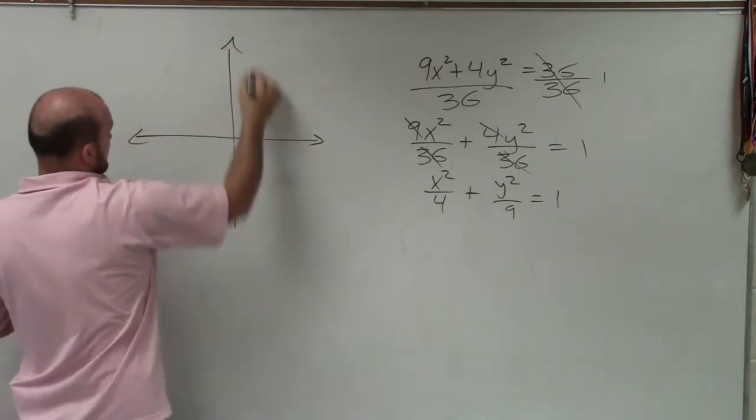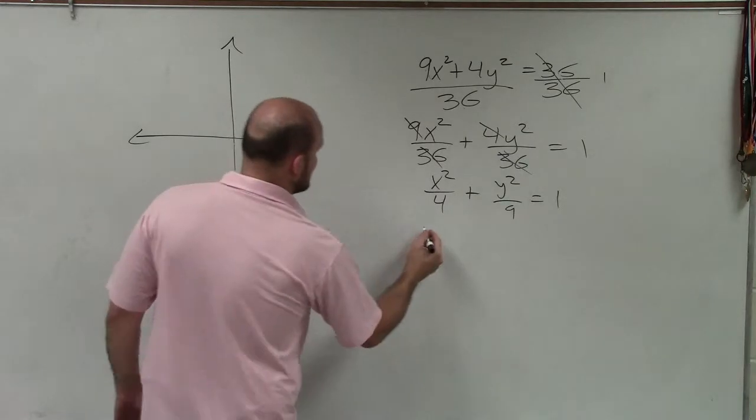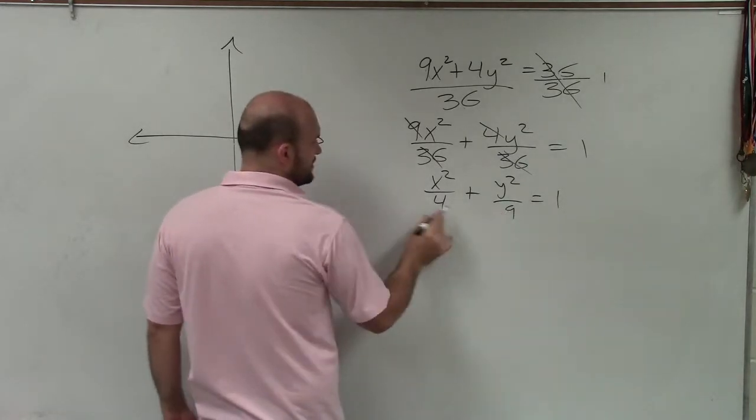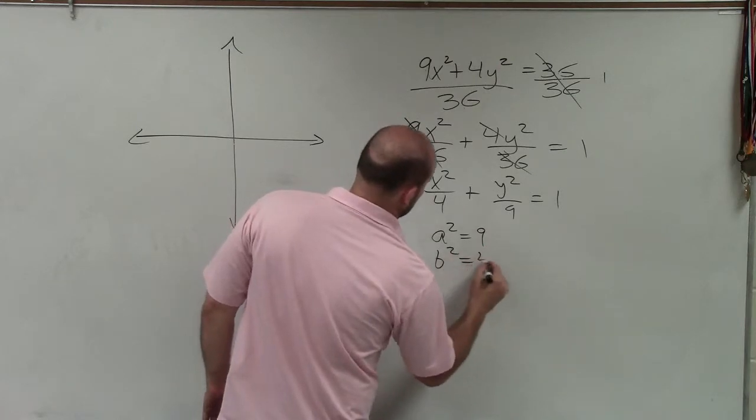So the next thing is, let's go ahead and determine our center. Well actually, let's go and see. So that's a², and that's b². So I can say a² equals 9, b² equals 4.